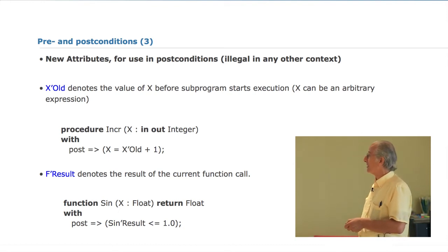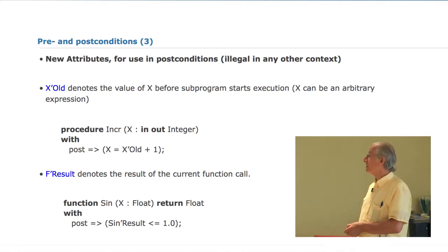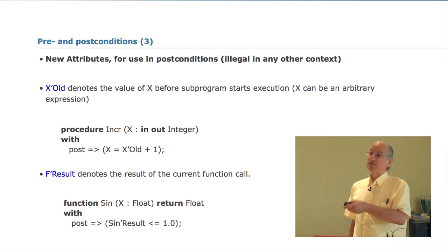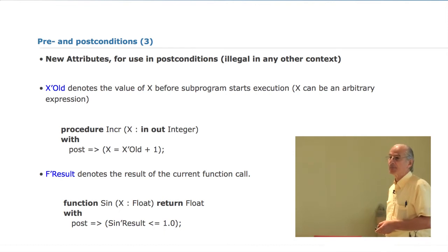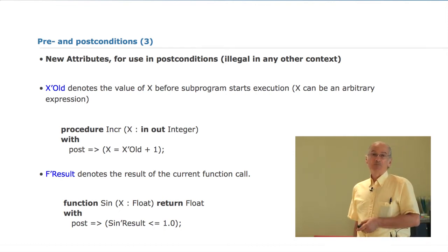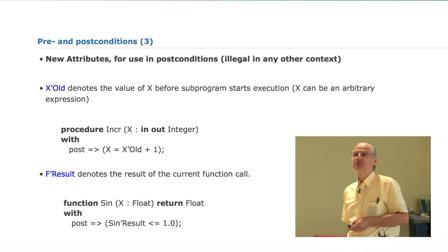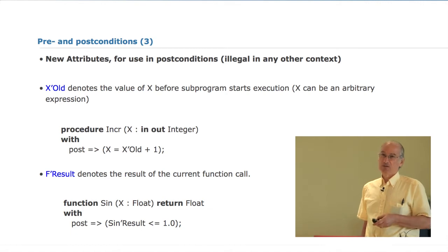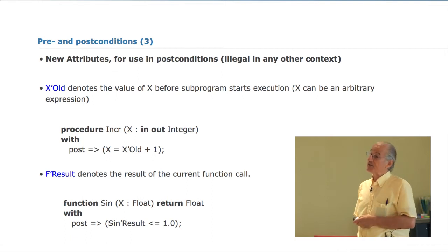Here is a somewhat more challenging post-condition. You have a function in your trigonometric library and you might want to guarantee that the result is in general less than one. If you have a series expansion of the sine function, it might take a little work to determine that this post-condition is true. In general, good form says that post-conditions don't have side effects, because it is extremely hard to reason about their behavior if the post-conditions themselves modify the environment — the semantics of the program might be different if the post-conditions are enabled or not.